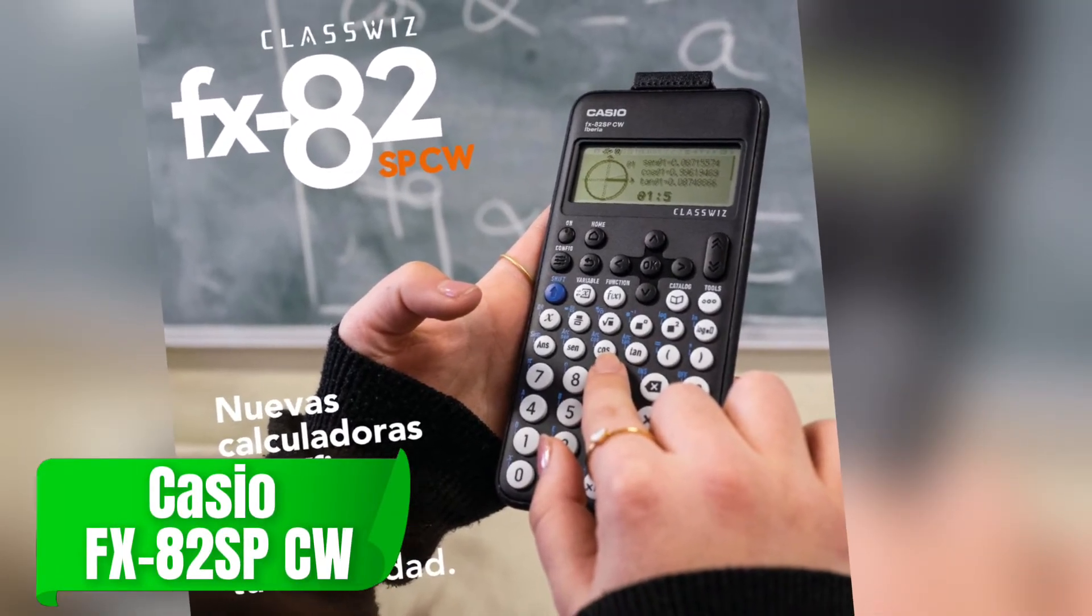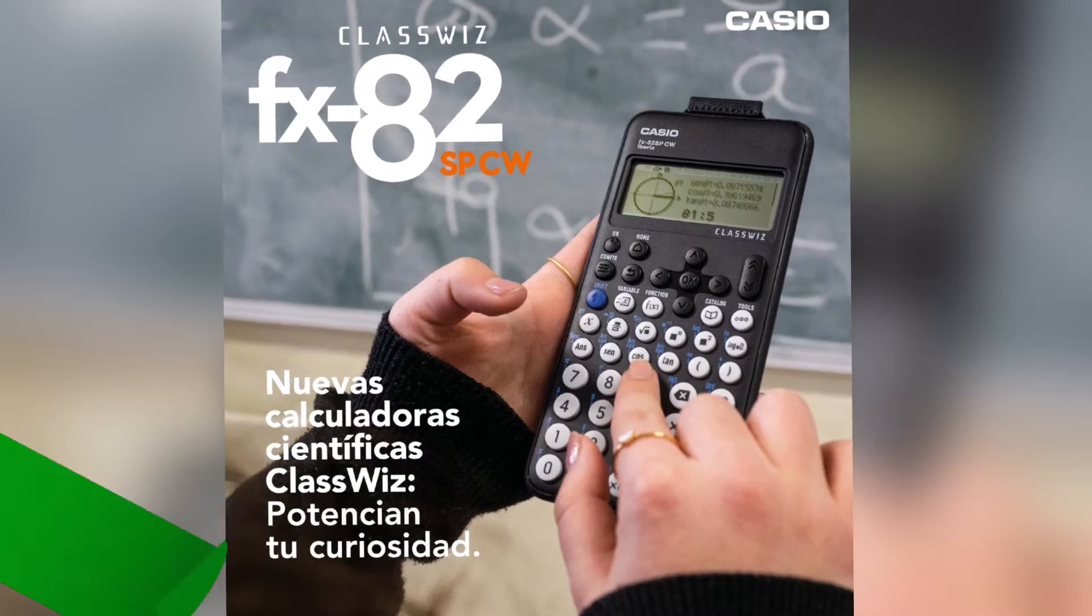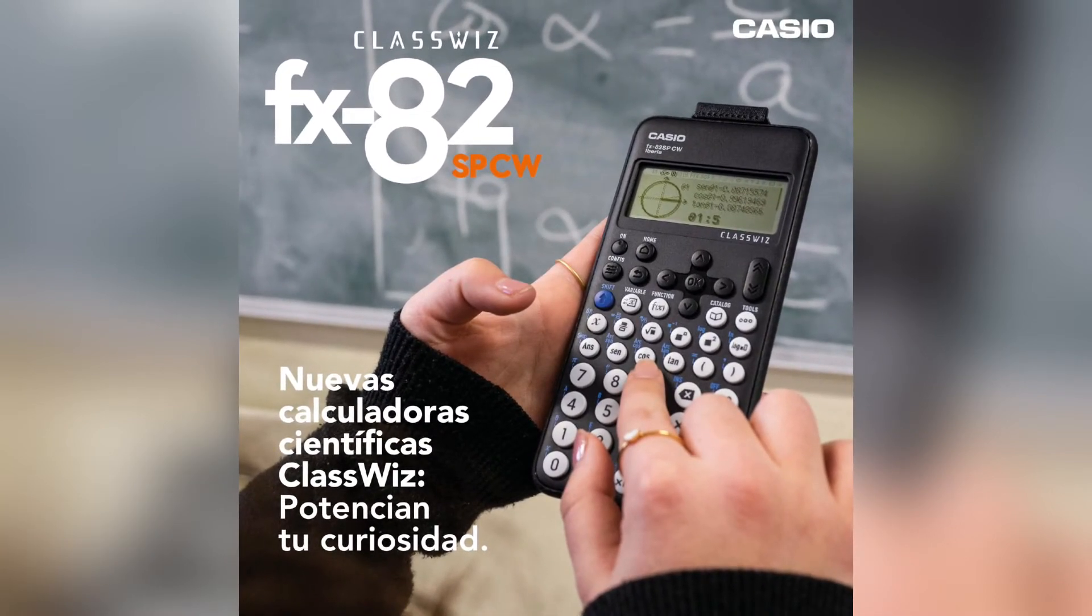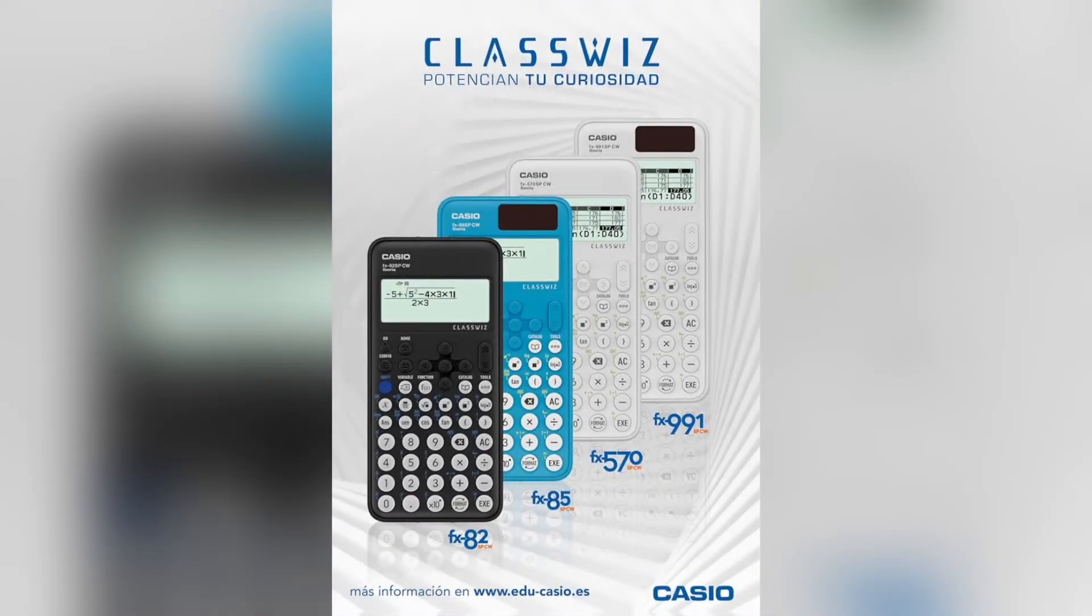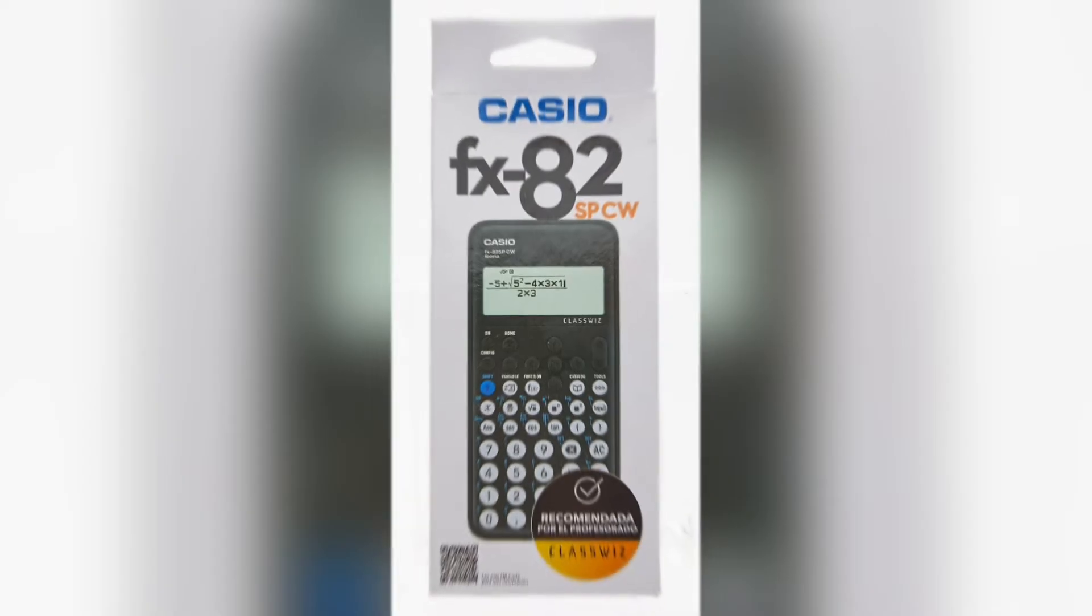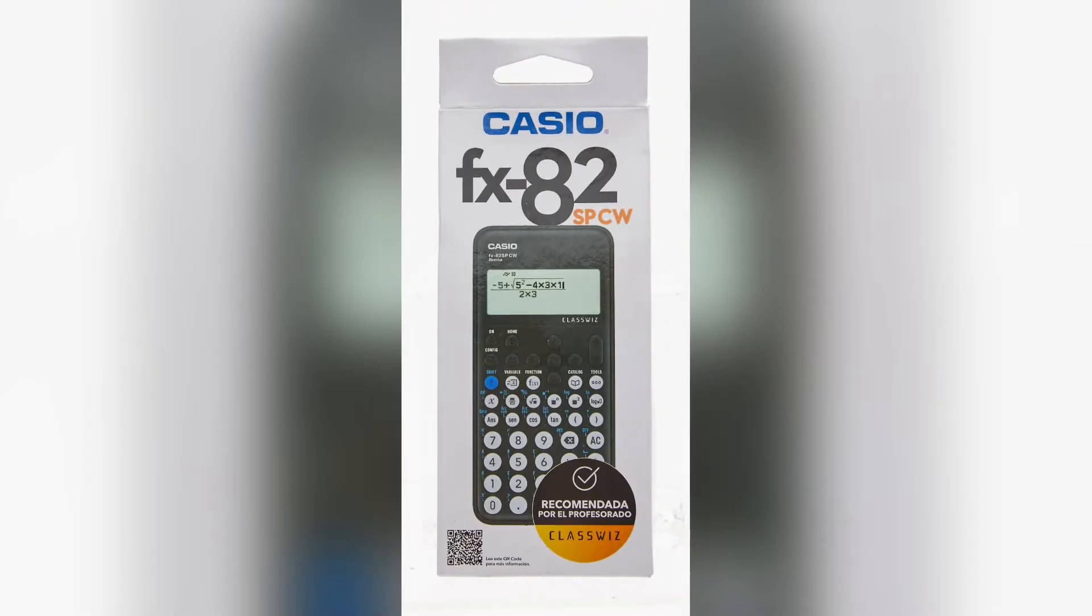Finally, number five, the Casio FX-82 SPCW, a great budget option for students or those just starting out in engineering. Despite its lower price point, this calculator still offers a range of functions like statistical analysis, trigonometry, and probability calculations. It's ideal for first-year engineering students who need reliable performance but aren't yet dealing with the most complex equations or graphing requirements. This is a great entry-level calculator that still manages to handle a good variety of engineering tasks.